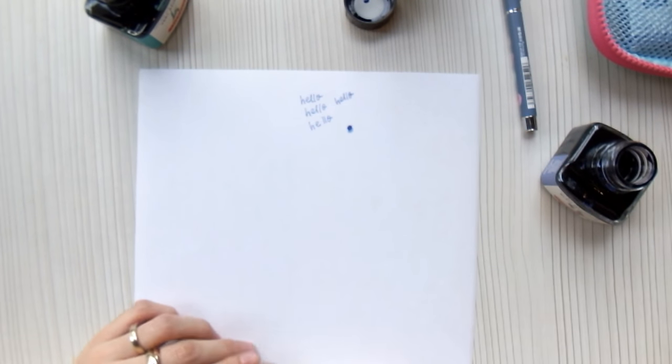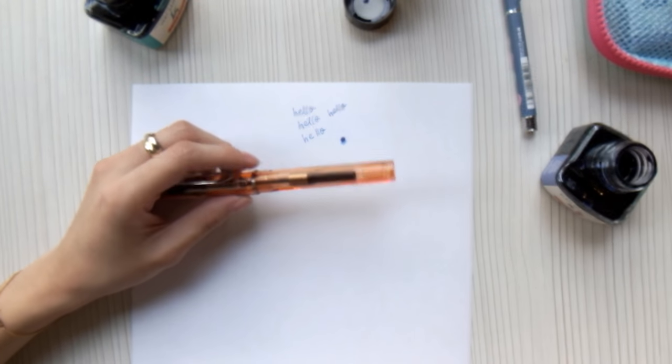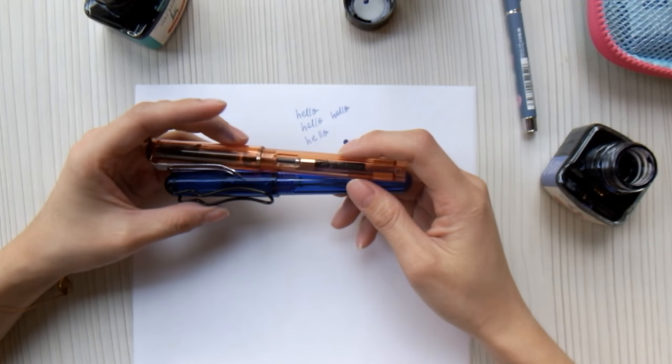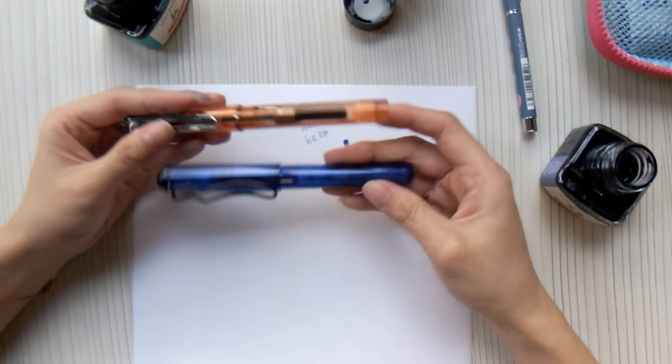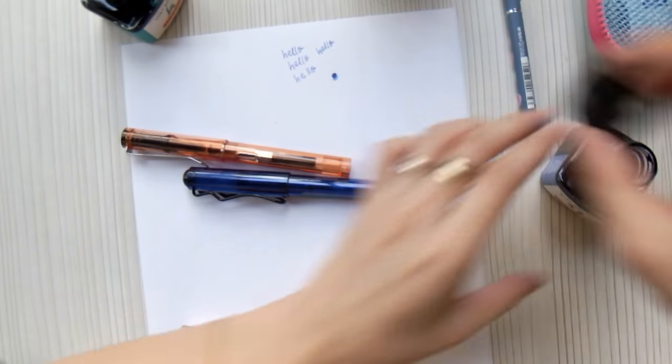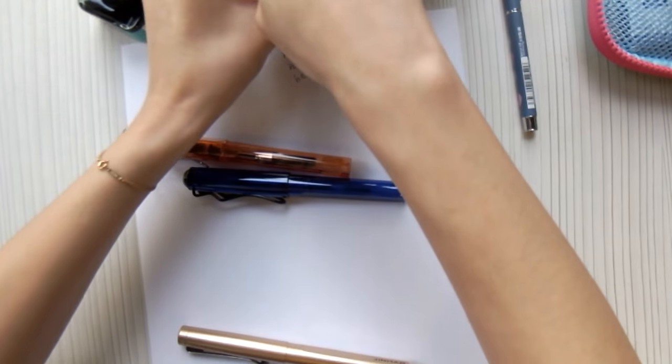Then the next pen that we have in the shop will be, both of these are very similar. One is from Jin Hao and the other one is a transparent fountain pen. We have both in the store. I just want to show you how it looks like.